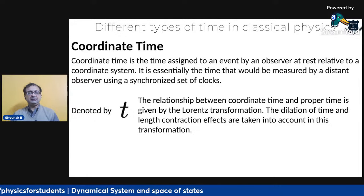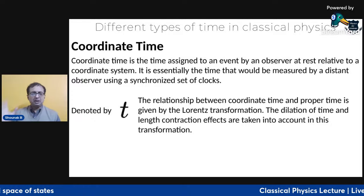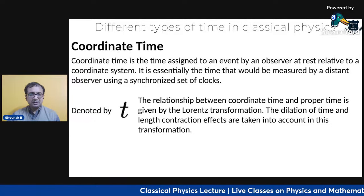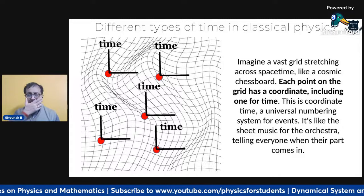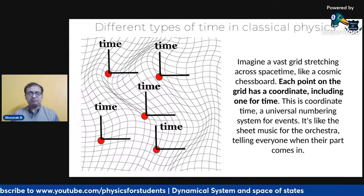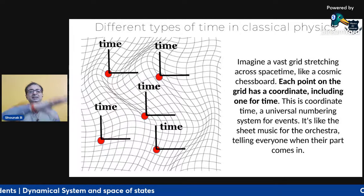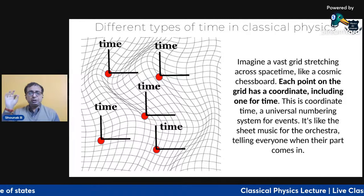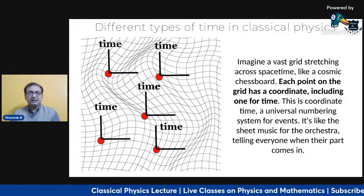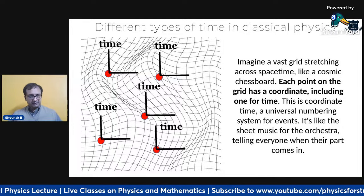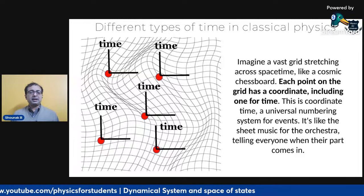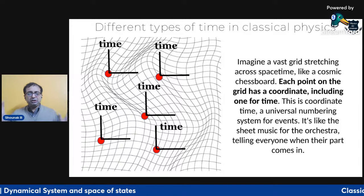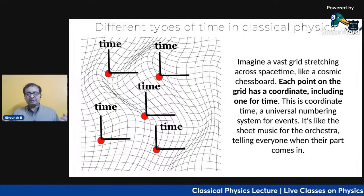We can say coordinate time is like a universal numbering for events — it is like the sheet music for an orchestra, telling everyone when their part comes in. Coordinate time is basically the general time we all refer to: it is the time on your clock right now, at 9:35.